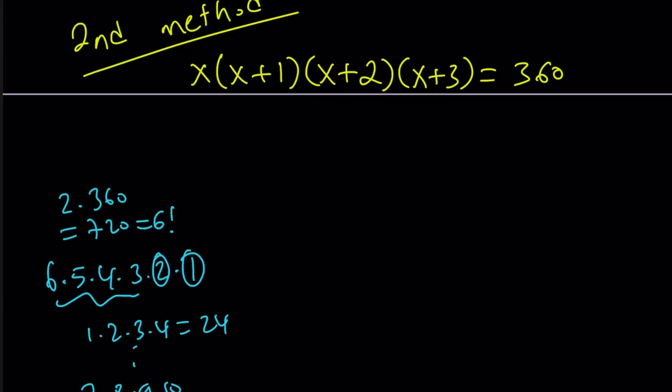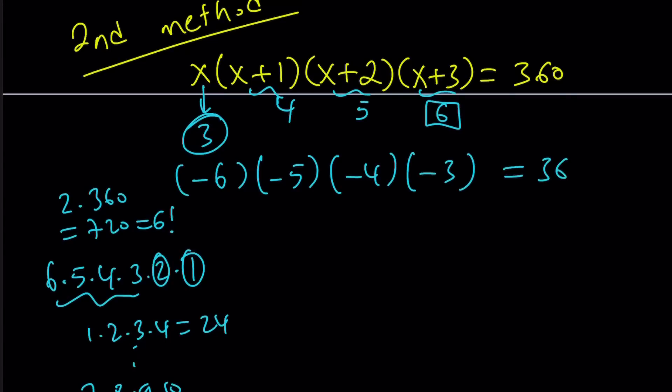Let's get back to this. So 360 can be written as 6 times 5 times 4 times 3, which means this can be a 3. This can be a 4, 5, and 6. Obviously, it's all going to work, so that means x equals 3. How do you find the other solution? Well, the other solution is just going to be reversing everything, like kind of negating everything. So instead of take this 6 larger number and use it as a negative, and then negative 6 multiply by negative 5, multiply by negative 4, multiply by negative 3 is also going to be 360. Therefore, x equals negative 6 is going to be another solution.